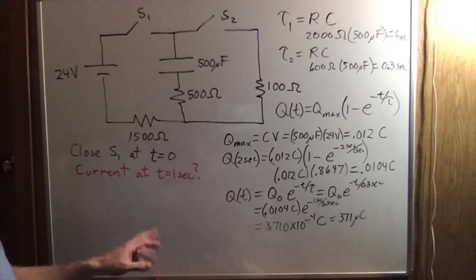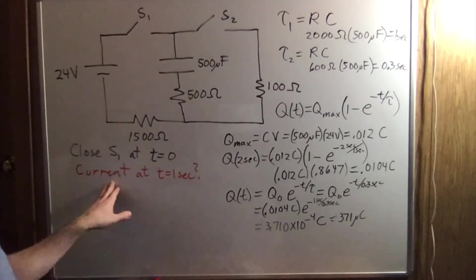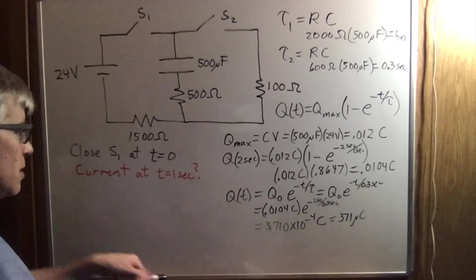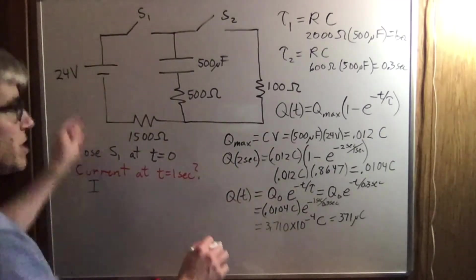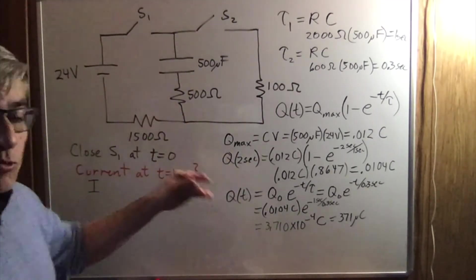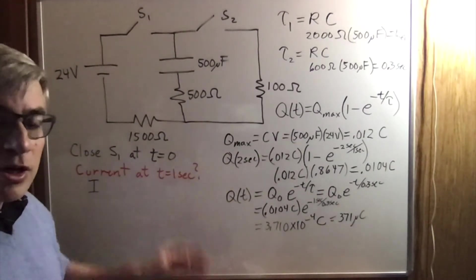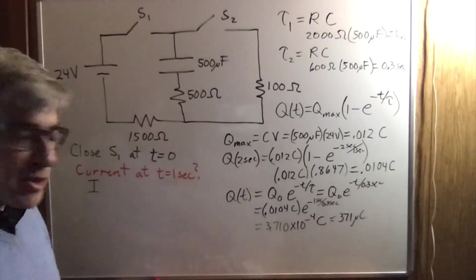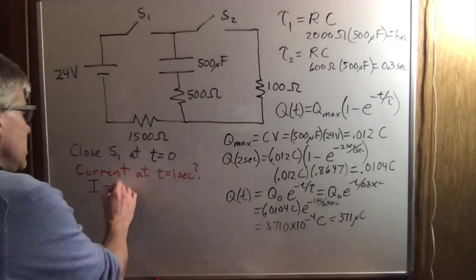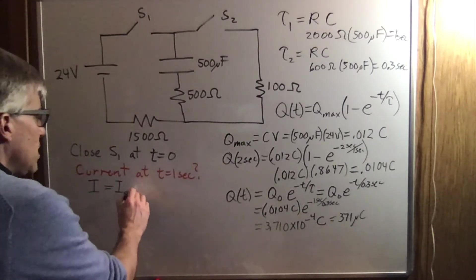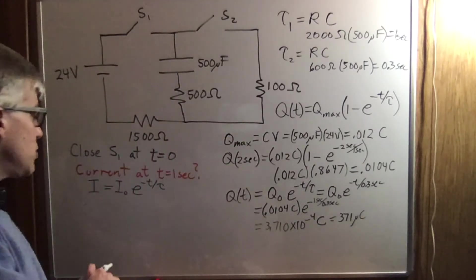We can also ask other questions. While this thing was charging back at t equals one second, how much was the current? The current starts out rapid and then decays. Whether you're charging or discharging, the current is always dropping off exponentially. So the current is equal to current zero e to the minus t over tau. That's a familiar expression.